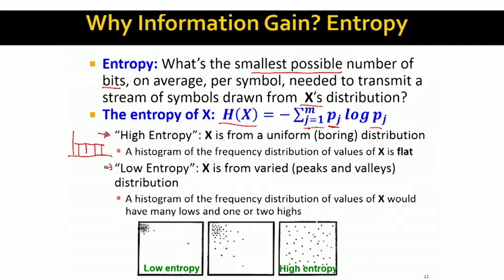Distributions of low entropy are interesting — they have many peaks. So if I plot the histogram of a distribution with low entropy, this distribution would have a high peak and the rest would be very low. If a distribution has very high entropy, it's very hard to guess the value of x. And if a distribution has very low entropy, then it's very easy to guess the value of x.